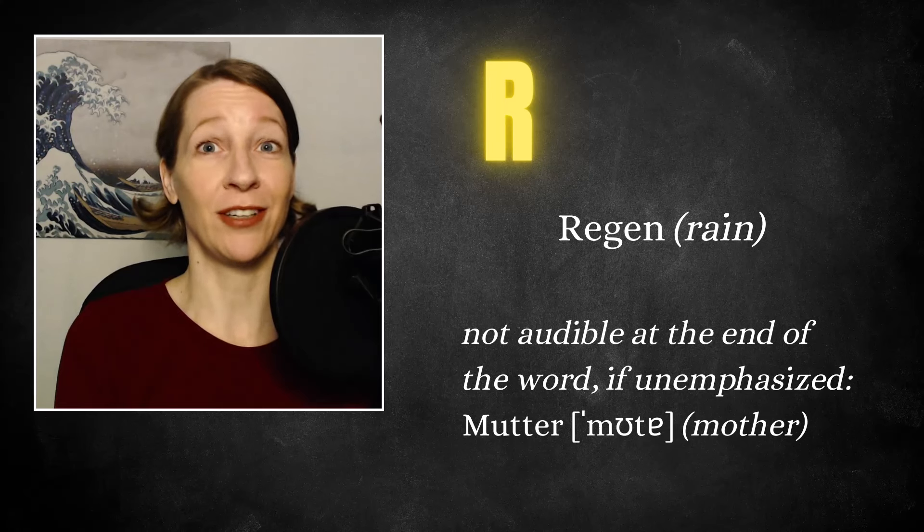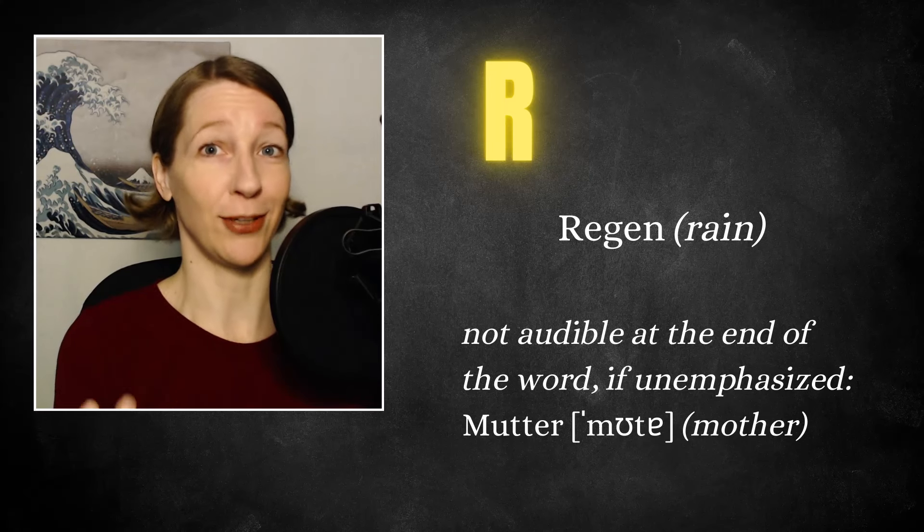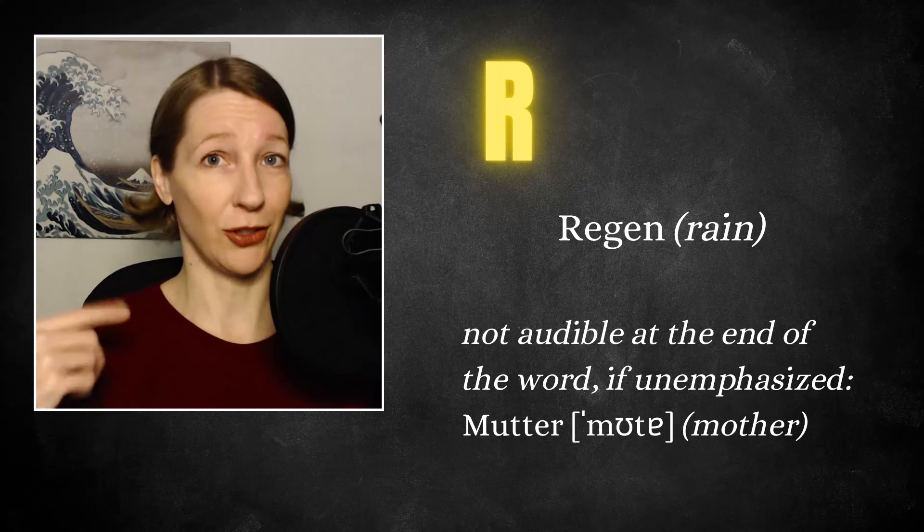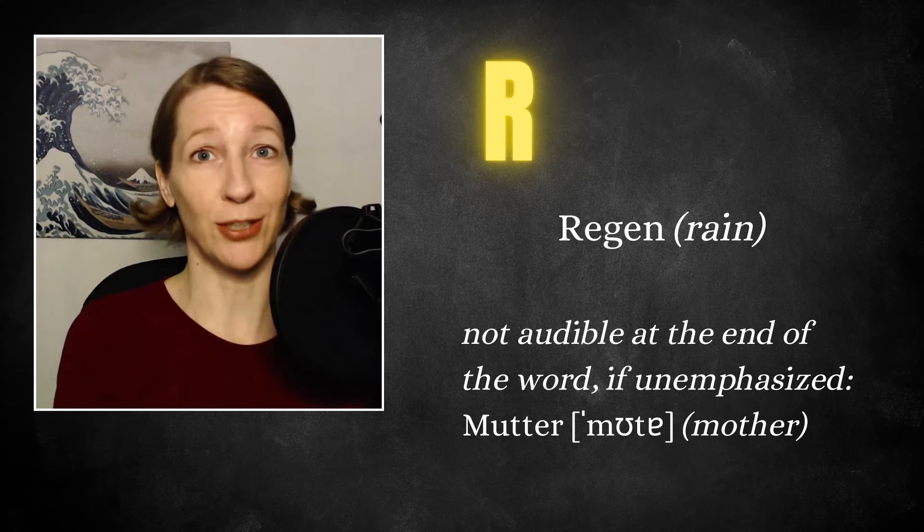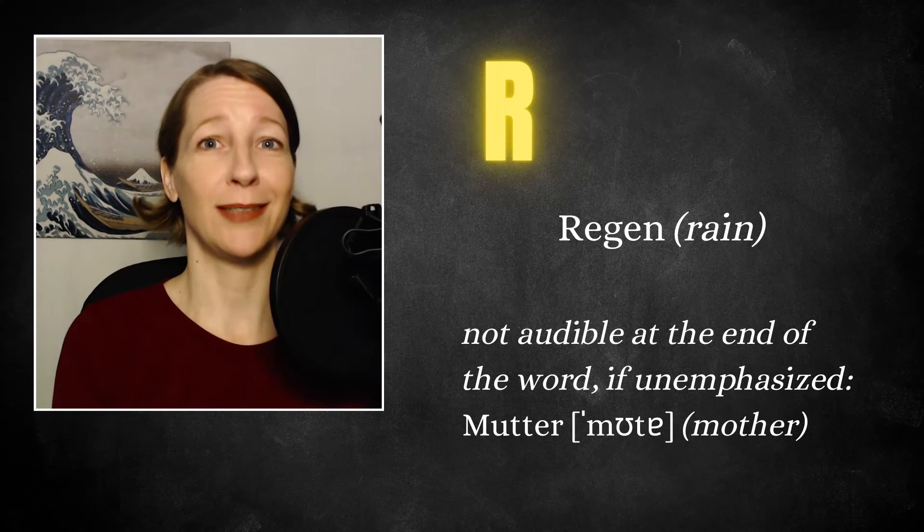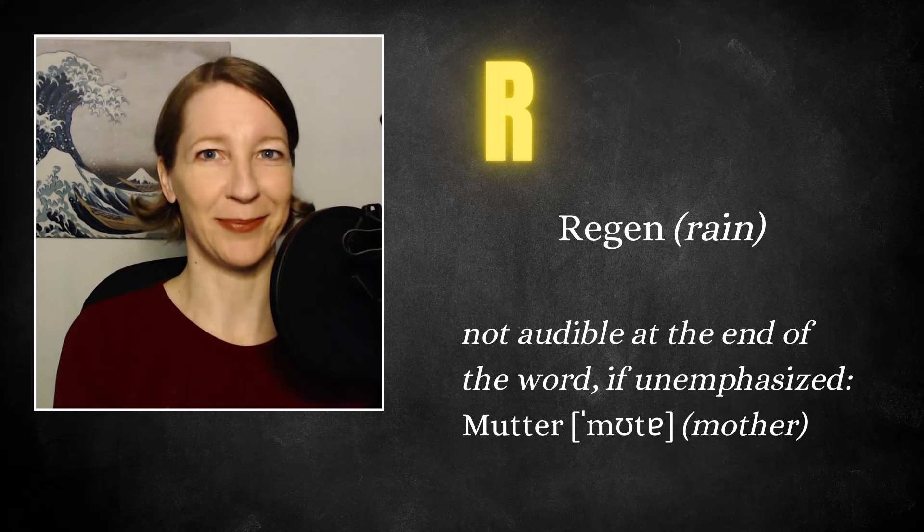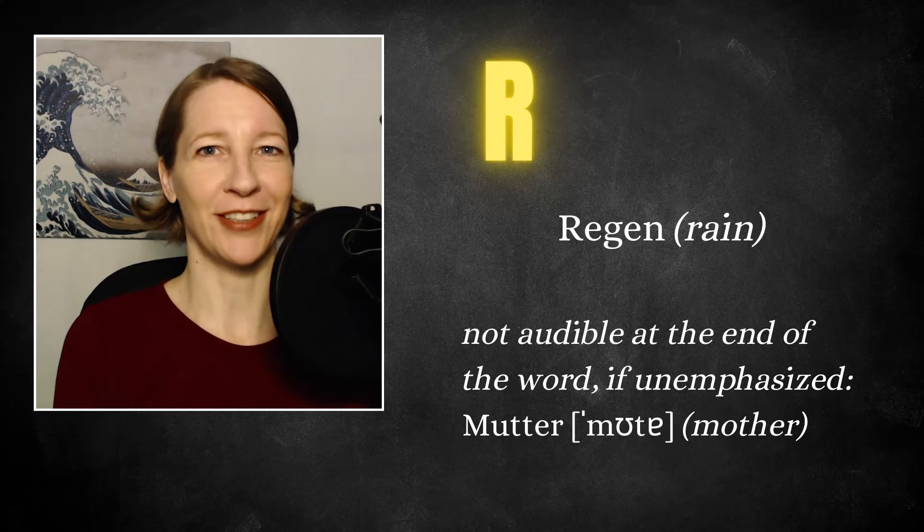So when you have a word like mother, for example, and you don't pronounce it in the American way with a strong R in the end, and you say mother and you don't hear the R either, that's very much the same in German. Mutter. Any word that ends in ER. Mutter, Bruder, Schwester. That's mother, brother, sister.